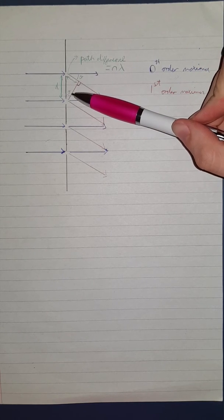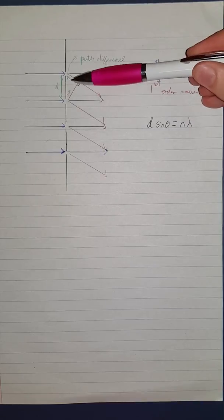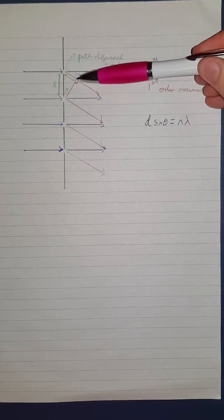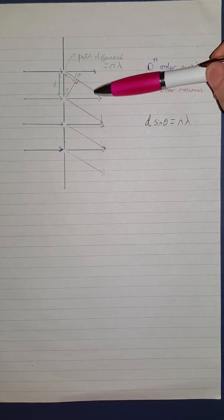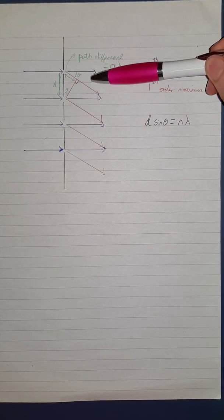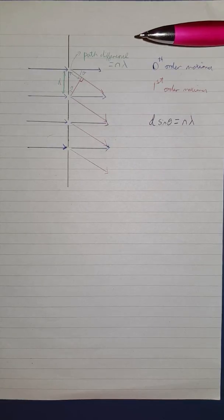Using SOHCAHTOA, we can see that d sin theta equals this distance here, which is the path difference between this beam of light and this beam of light, which will also be the same for this beam of light and this beam of light, and so on.